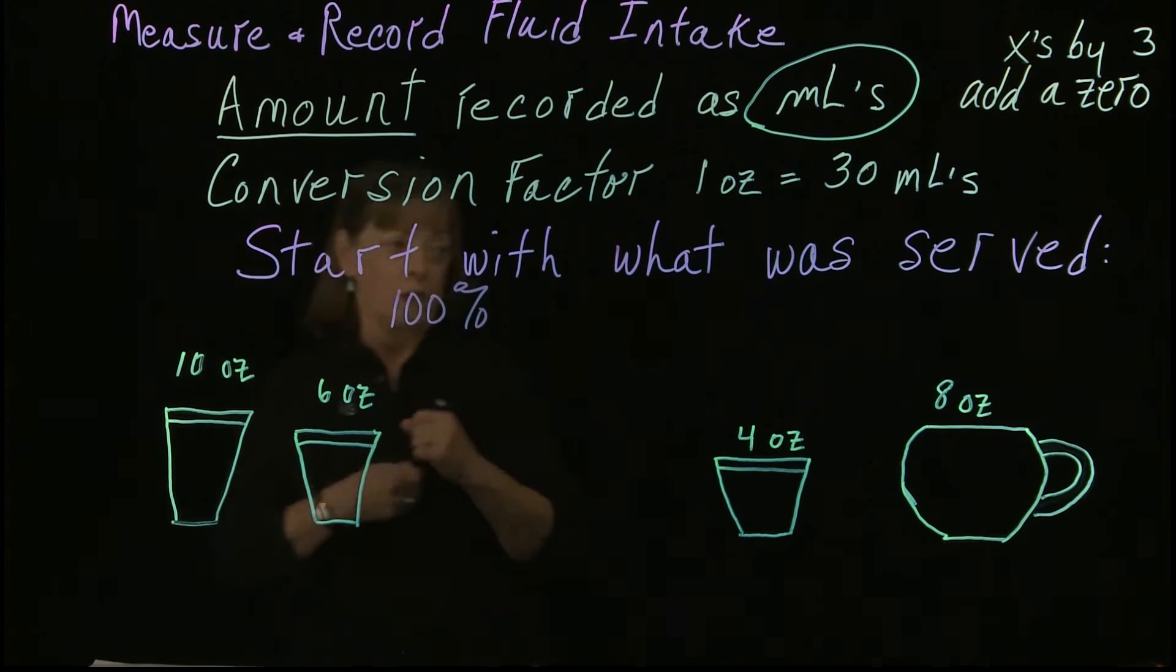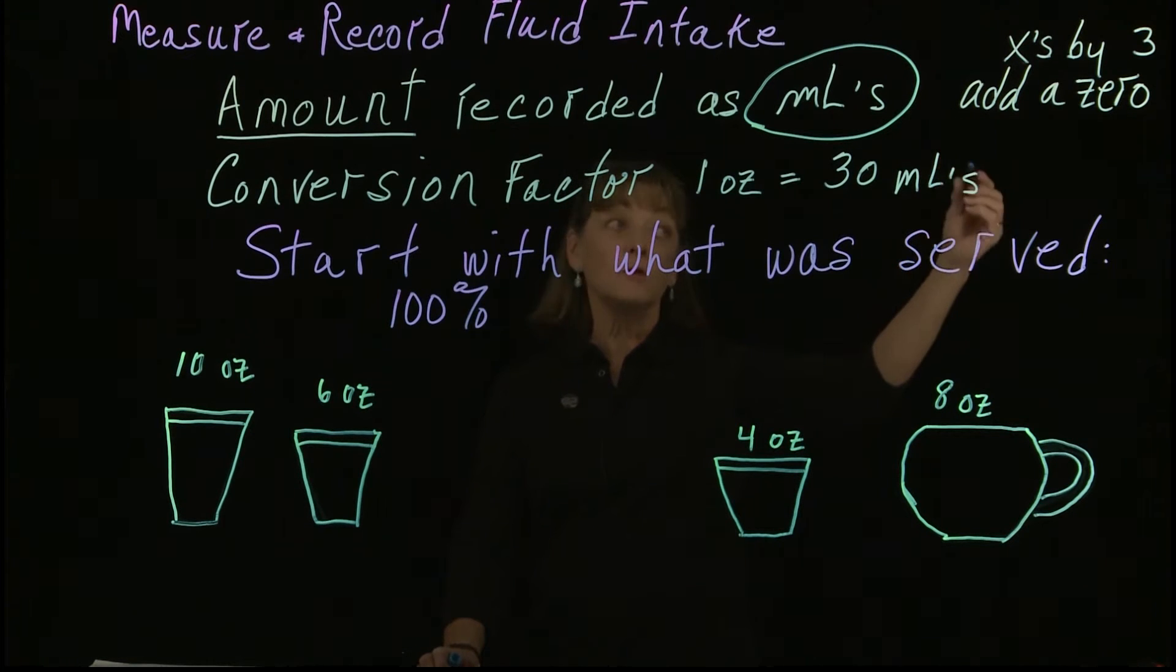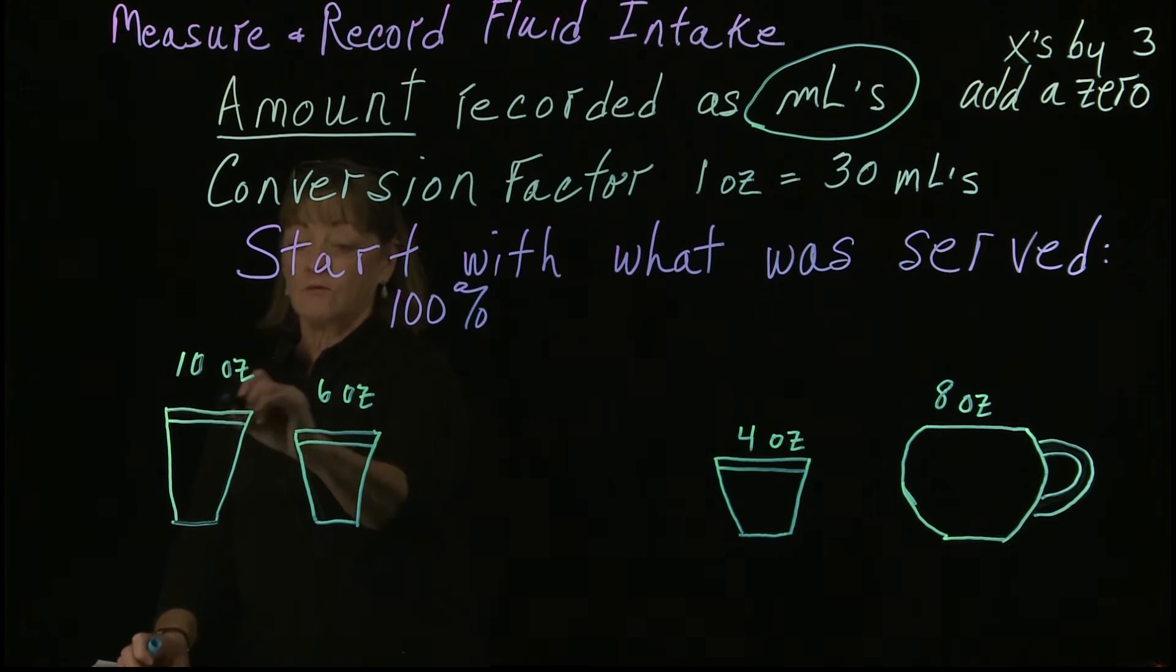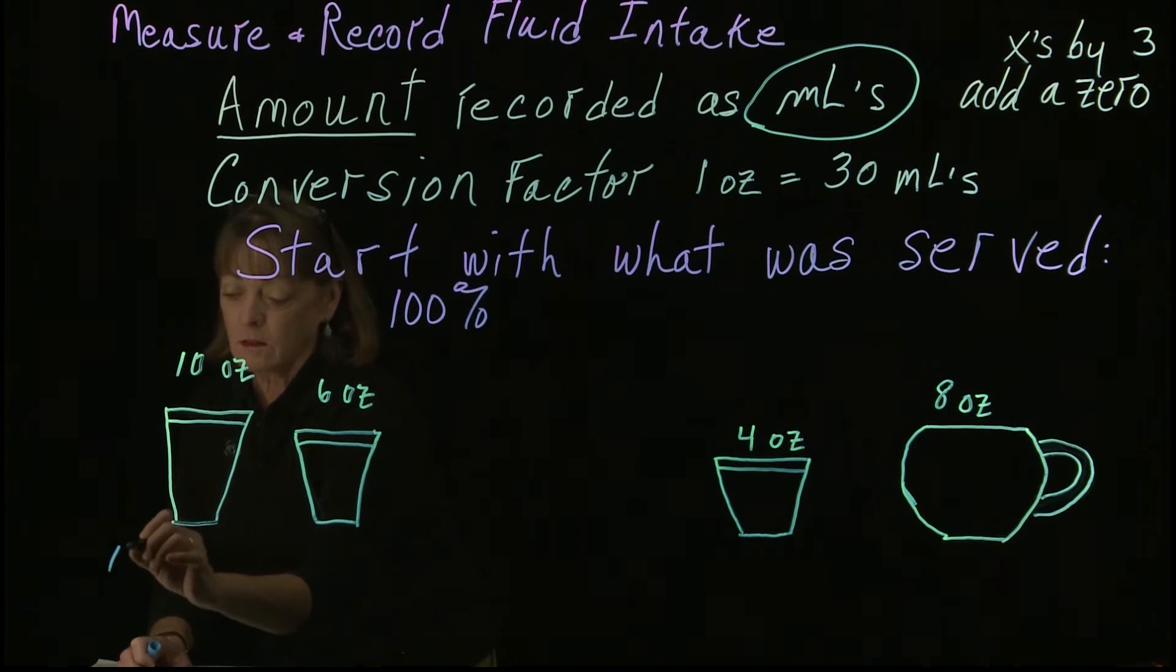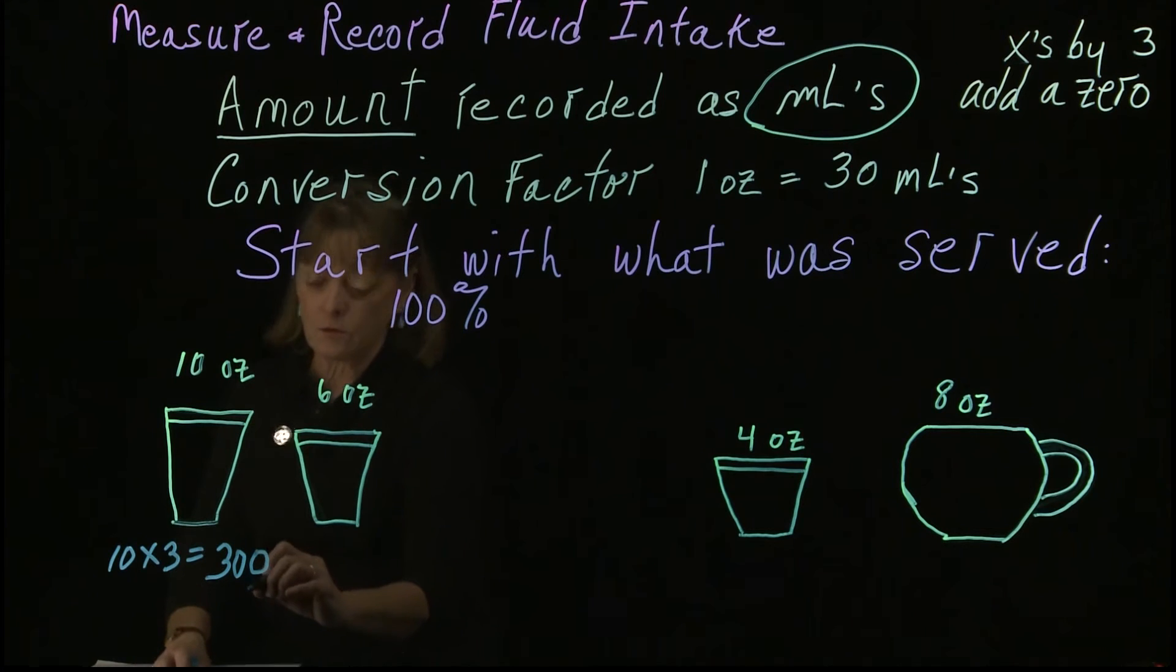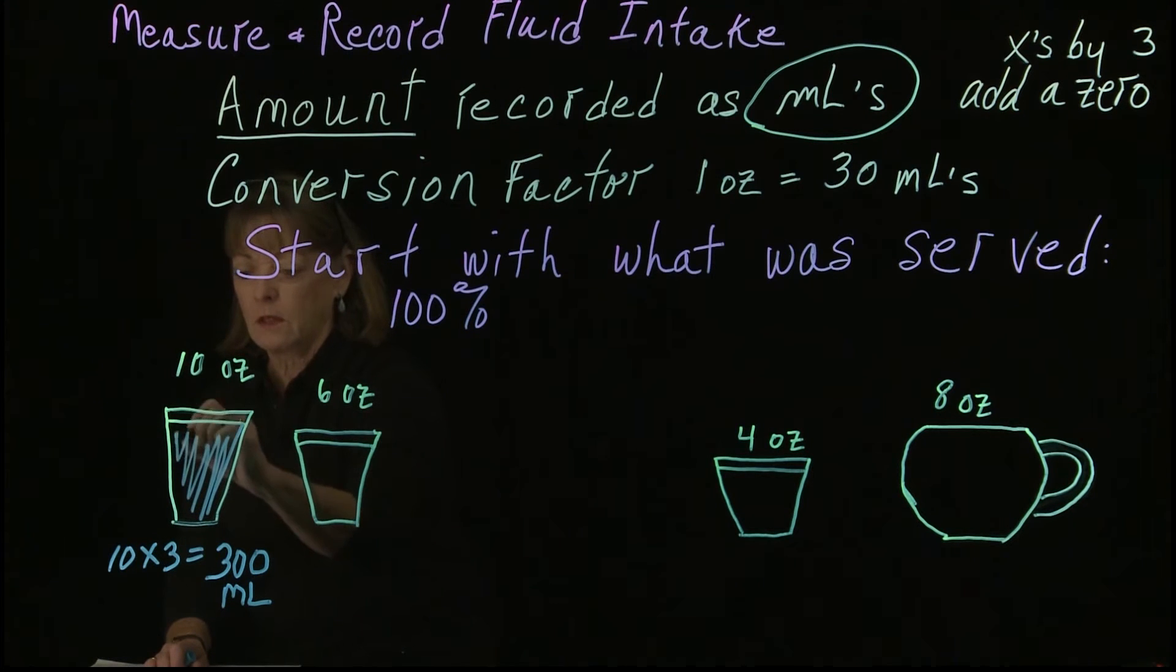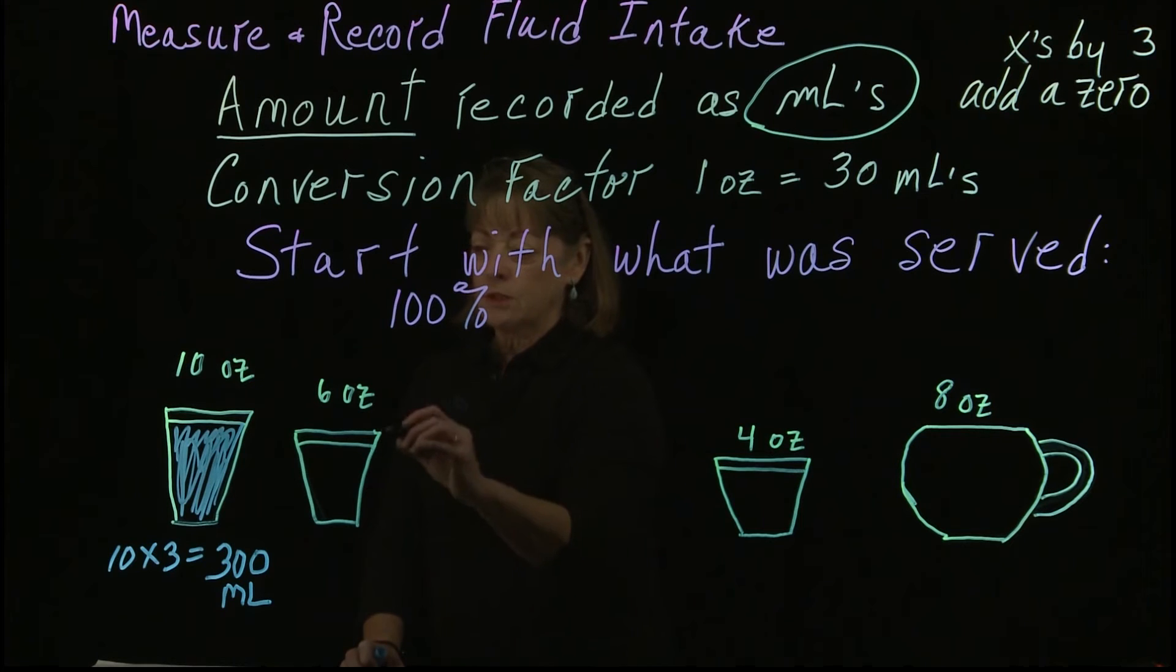So let's figure that out for these particular amounts. If we have a 30 mL conversion factor, we can make this really easy. We're going to multiply by 3 and add a 0 to that number. So if I take 10 ounces and convert it to milliliters, I'm going to multiply 10 by 3, which gives me 30 and add a 0. So 300 mL is my conversion when this is all filled up as a 100% serving.